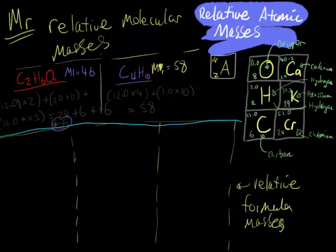Down here I'm going to be doing relative formula masses, which is slightly different because it includes things which aren't included in relative molecular masses. The first compound which I'm going to be doing here is CaCO₃ — calcium carbonate.